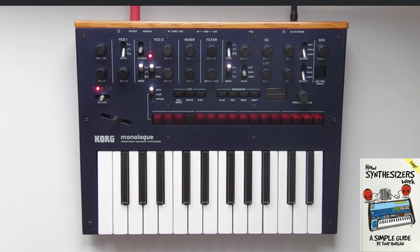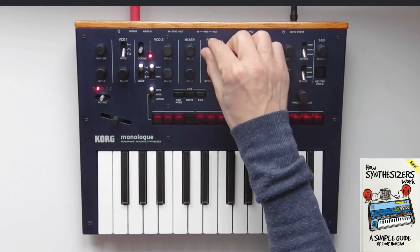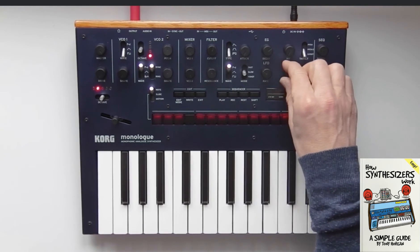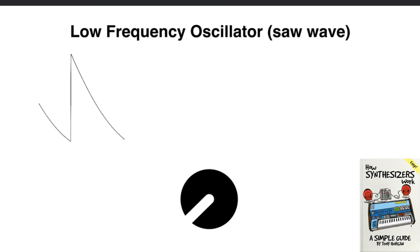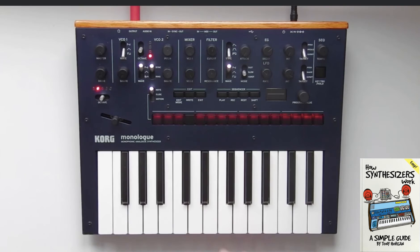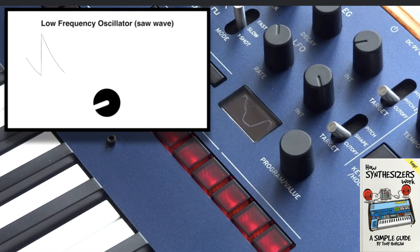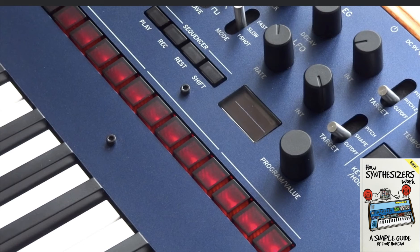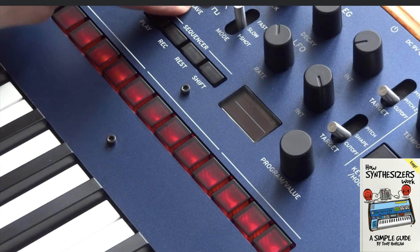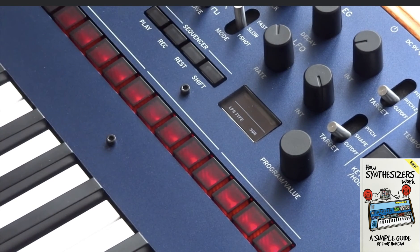The LFO can do that in a more precise way than we can do it manually. If we change the wave to a square wave, this will produce more of a switching kind of sound, even though there will be a slight slope.